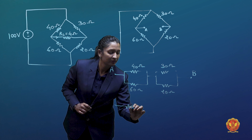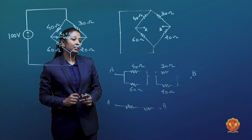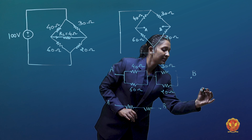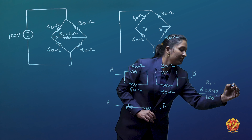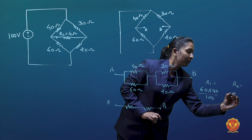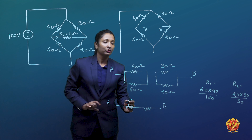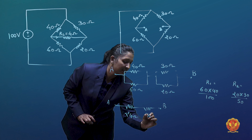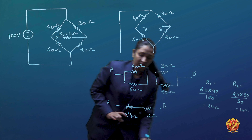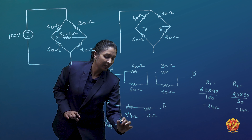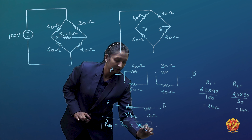We can solve the problem this way. Between terminal A and terminal B, the parallel combination is 60 multiplied by 40 divided by 100, giving R1 equal to 24 ohms. R2 is equal to 20 multiplied by 30 divided by 50, which equals 12 ohms. So RAB or RTH will be equal to 24 plus 12, which is 36 ohms. This is our final RTH value.